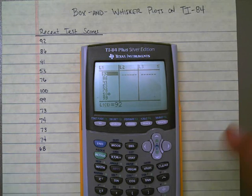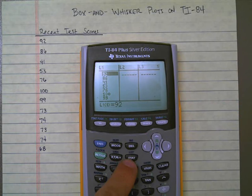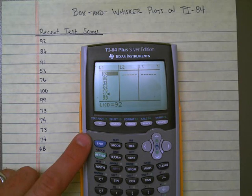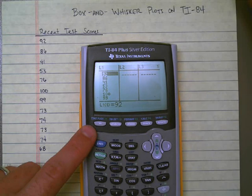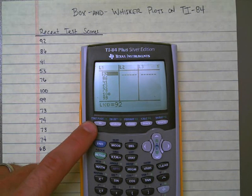Okay. So now, time to create the box and whisker plot. Here's what we want to do. Notice we did statistics. If we want a statistics plot, we need to go to statistics plotting right here. It's in blue, which means we're going to have to hit second to get to it.